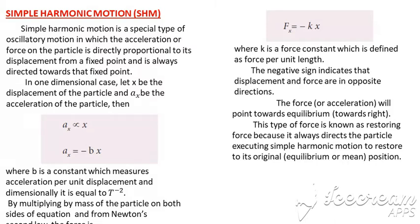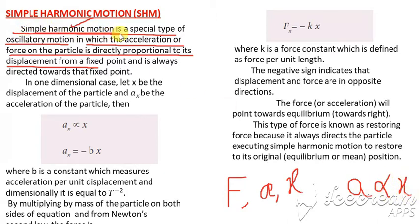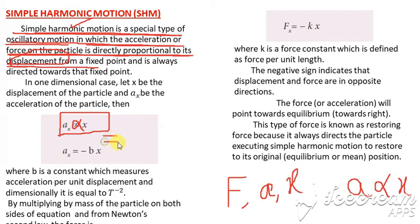Simple harmonic motion is a type of oscillatory motion in which the acceleration or force is directly proportional to its displacement. Here, F is force, a is acceleration, and x is displacement. The acceleration is directly proportional to the displacement. To remove the proportionality, we introduce a constant, writing a = -bx, where the negative sign indicates that acceleration and displacement are in opposite directions.